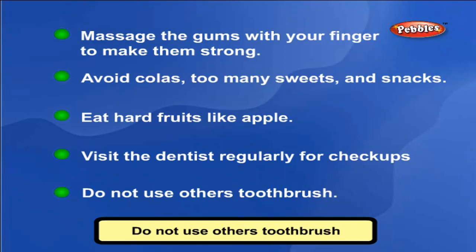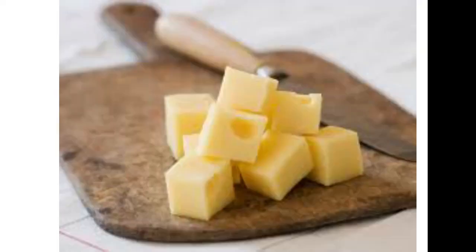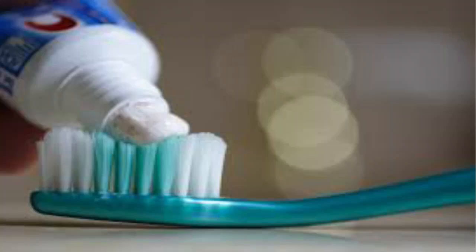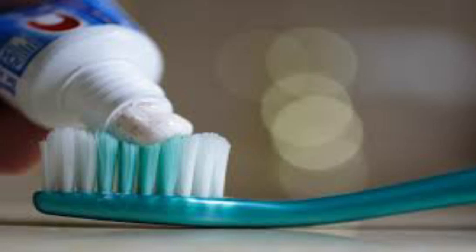A dentist is a doctor who looks after our teeth. Calcium and phosphorus are the essential minerals to keep the teeth strong. Dairy products such as milk, curd, cheese, and foods such as soya, oranges and some seafoods are rich in calcium. Pumpkin seeds, nuts, fish and eggs are rich in phosphorus. Toothpaste contains fluoride, a mineral that helps to strengthen the teeth enamel and protect against decay.